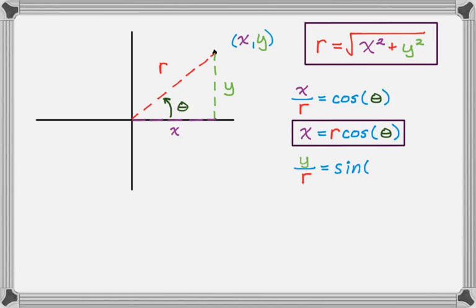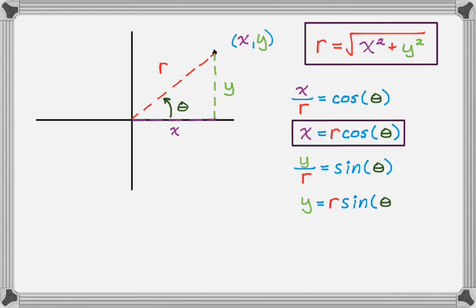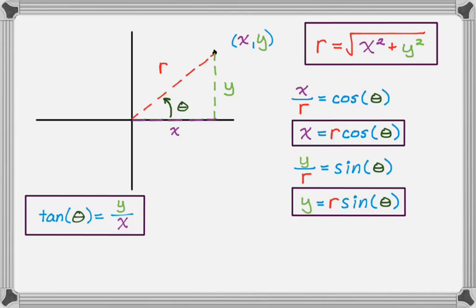Y over R is sine of theta, so Y equals R sine of theta. A fourth equation I'll use quite a bit is tan of theta equals Y over X, or equivalently theta is the inverse tangent of Y over X. Those are the big four equations and they're going to come up all the time.